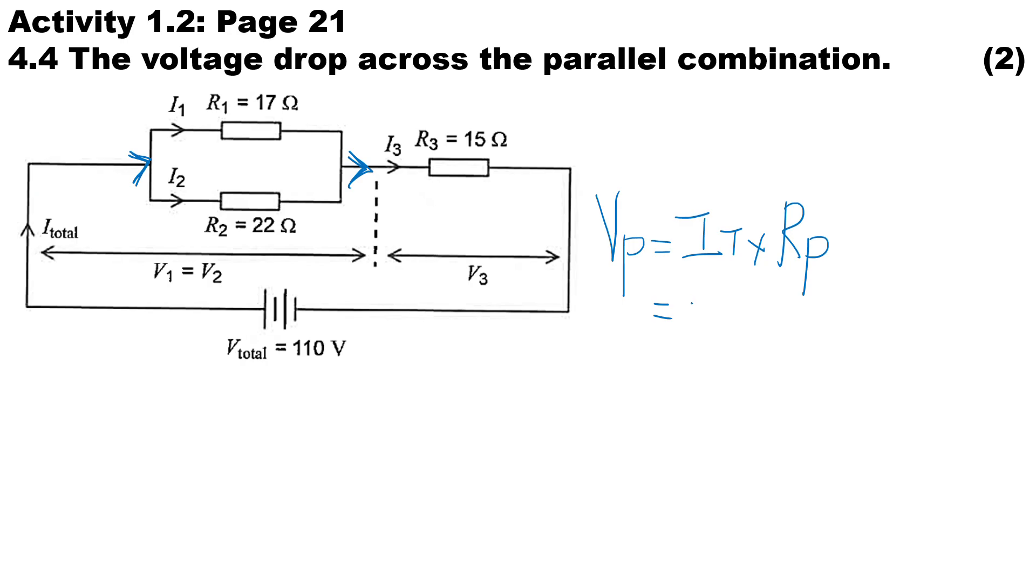Okay, so I total entering is 4.473, and the resistance of the parallel branch which we've calculated earlier is 9.59, therefore the volt drop across the parallel branch will be 42.896 volts.